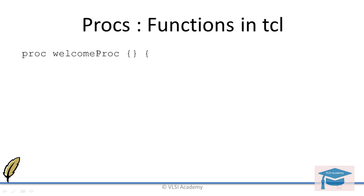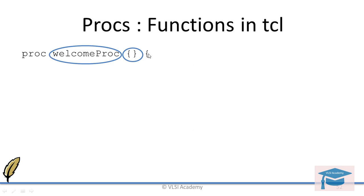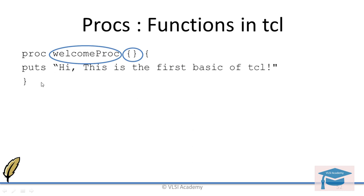This part is called the name of the proc, and this part is where you put your arguments. Here no argument is required, so there is no argument, but you still have to define it. This part is the beginning of the proc body. You have to put the opening curly brace in the same line as the keyword proc — same line it should be, otherwise it will give a syntax error. Then you print some statement and close it. This is how you call your procedure — just write the name of that function and it will call it.